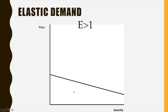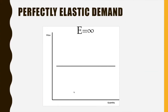If you get an elasticity equal to infinity, demand is said to be perfectly elastic — it's a horizontal line. Here, price doesn't change, but you can purchase as many products as you want at that price. This is an actual market situation we'll discuss later.